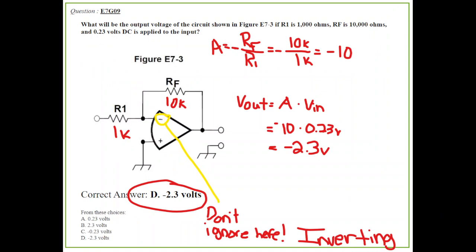What would the output voltage of the circuit shown in figure E7-3 if R1 is 1,000 ohms and RF is 10,000 ohms and 0.23 volts DC is applied to the input? But it's a two-part problem. The first thing you need to do is figure out the gain. Now, I made both of the resistors in standard form of K. So, kilohm. One kilohm, 10 kilohms. That makes the math easy because a kilohm divided by a kilohm is 1. So, K divided by K is 1. You could ignore that. 10 divided by 1 gives you 10.